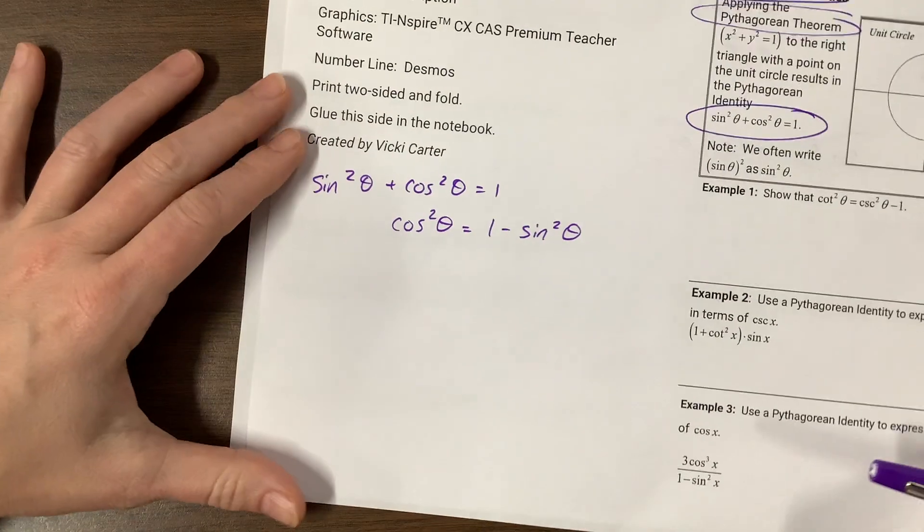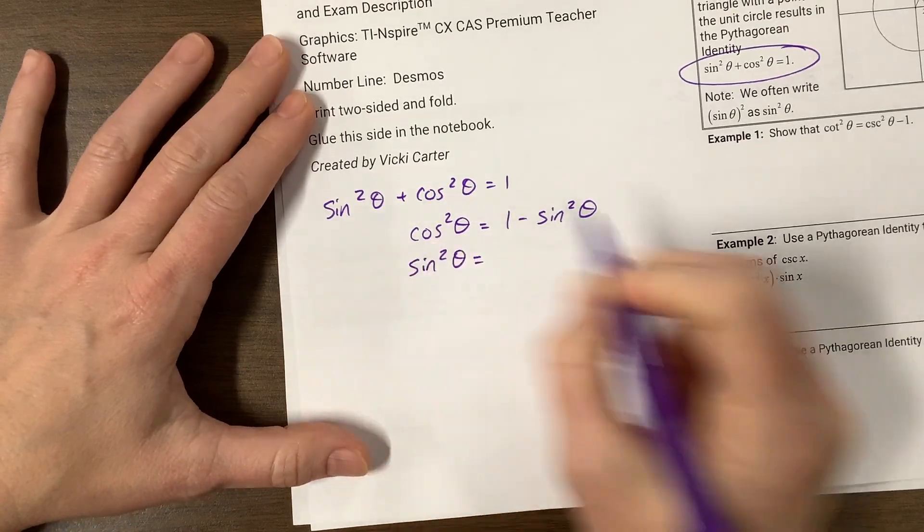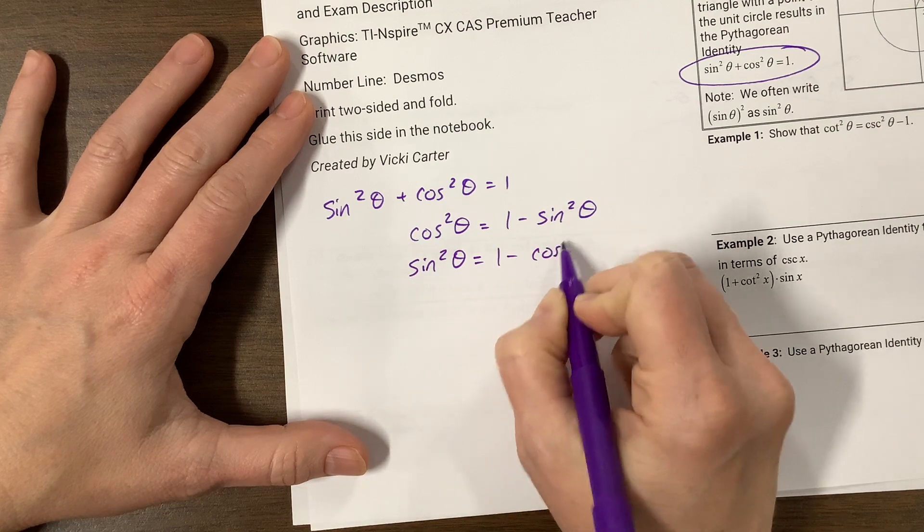Where was I? Okay. Same idea. We can solve for sine. I think I just did that one. So sine squared would be equal to one minus cosine squared.